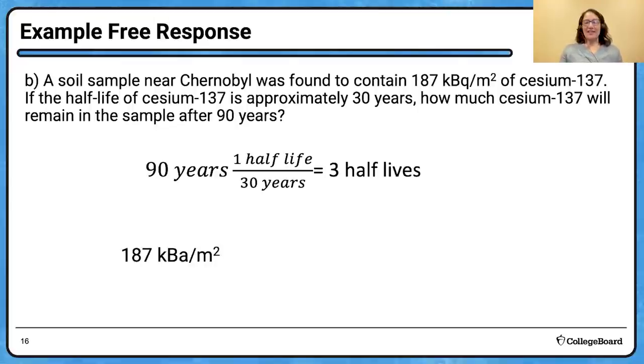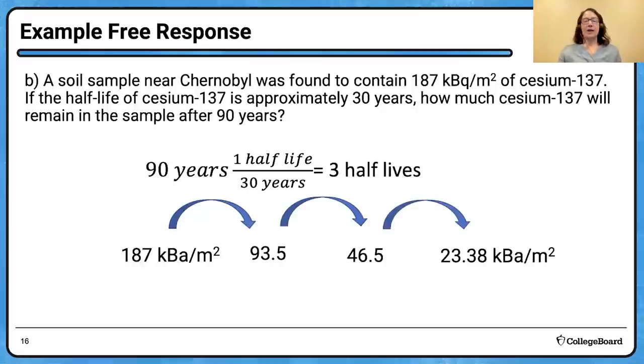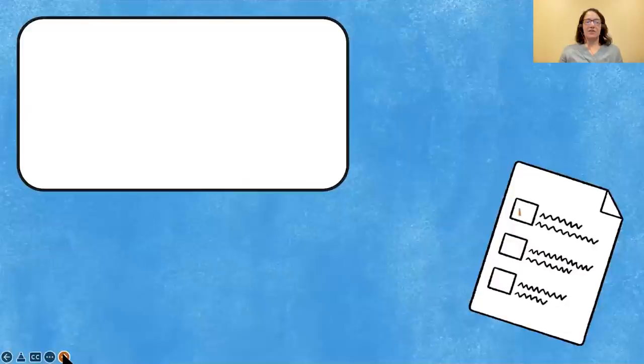So if I start with 187 kilobecquerels, after one half-life, half of those atoms are still radioactive. After another half-life, I half it again. And after a third half-life, I'm left with 23.88 kilobecquerels. I always tell my students to write this out and not do it in their head, because it'd be pretty easy to mistakenly count this wrong. Remember, one half-life is the process of halving it. There's a pretty good chance that you'll see a half-life calculation in a multiple choice or a free response.